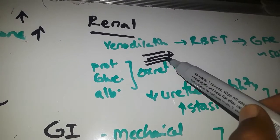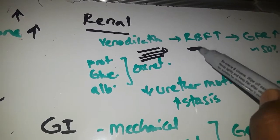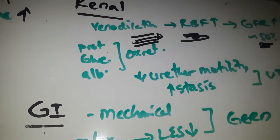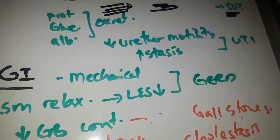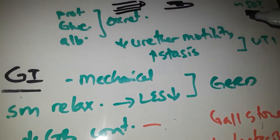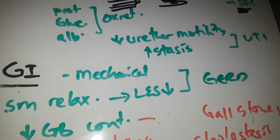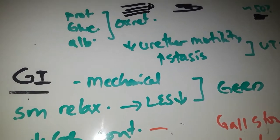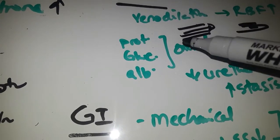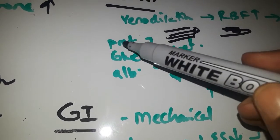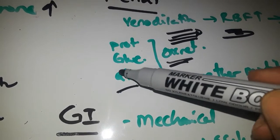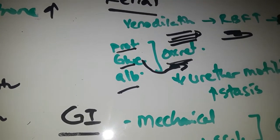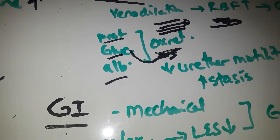The renal vasculature dilates. GFR increases by 50% in pregnancy and is supposed to return to normal after pregnancy. Protein, glucose, and amino acids are excreted in pregnancy because GFR is highly elevated. Glucosuria in pregnancy can be normal, not necessarily diabetes mellitus.